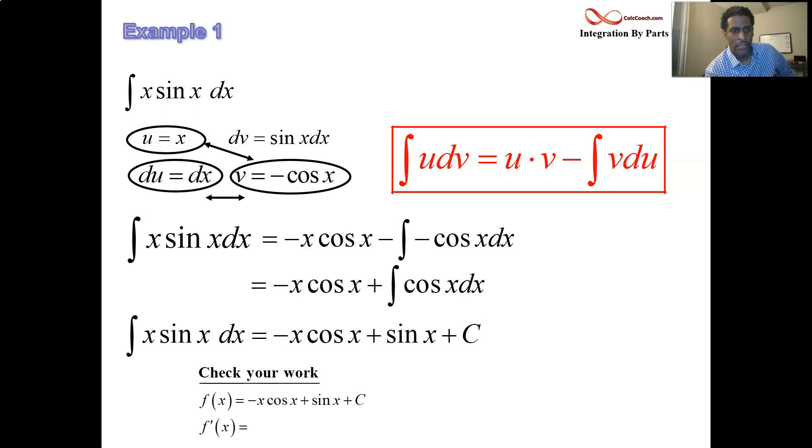Why not check it? What is the derivative of negative x cosine x, the first term? Derivative of the first, negative 1, times the second, cosine, plus the first, negative x, times the derivative of the second, negative sine of x. Then you have your second term there, which is sine x. As its derivative, we find that we get cosine x. C's derivative is just zero. We have a negative cosine x and a positive cosine x. Those guys are going to cancel. And the product there is positive, x sine x. We did it. It checks out. It's correct. That's our first example.